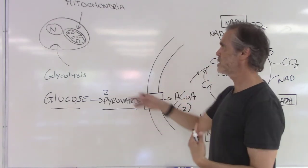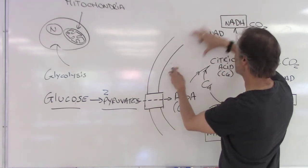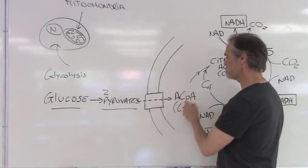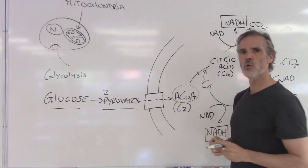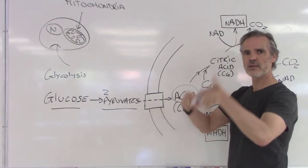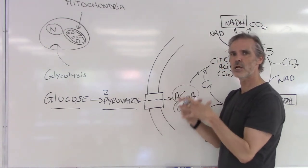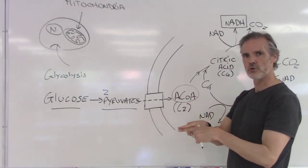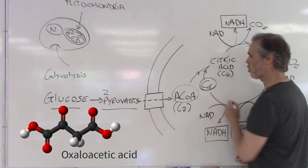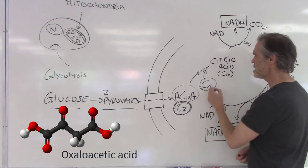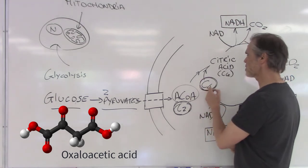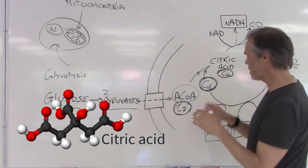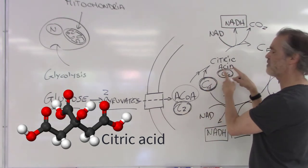Once inside the mitochondria and inside the matrix, this is where we are — this is the matrix. We will have the creation of a molecule that has two carbons called acetyl coenzyme A. Basically, pyruvate loses a carbon, associates with coenzyme A, and forms what is known as acetyl coenzyme A — it's an enzyme transformation. This acetyl coenzyme A is now going to merge with a molecule that has four carbons. It has two carbons, and it merges via an enzyme with a four-carbon molecule to create a molecule that now has six carbons — four plus two equals six.